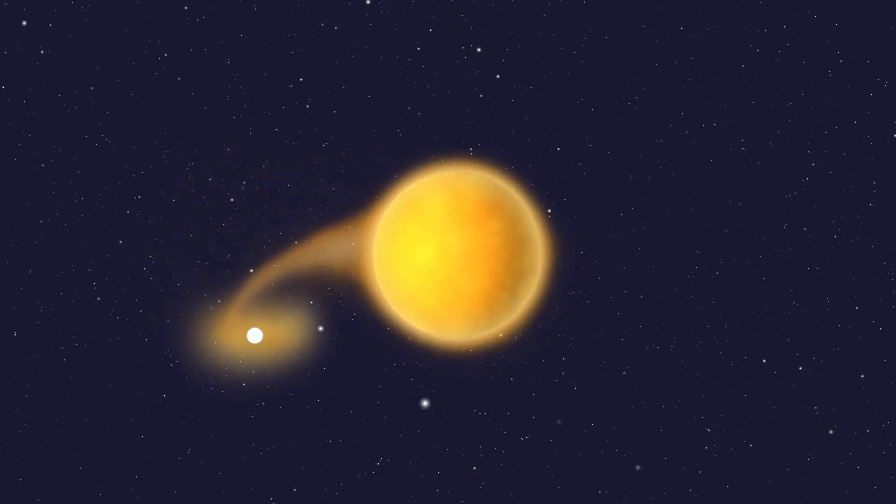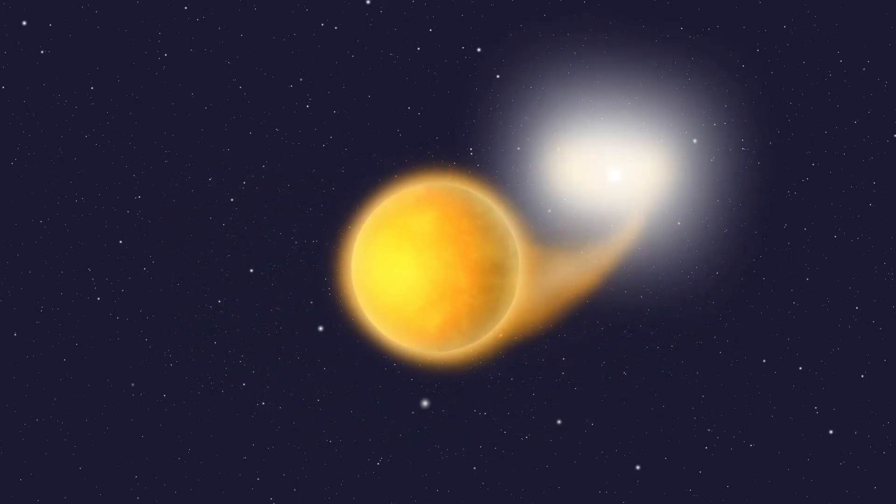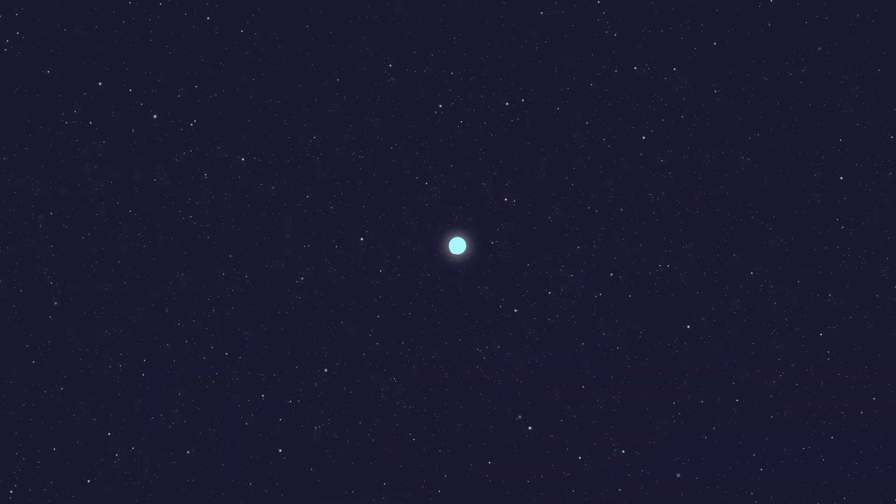If a white dwarf steals mass from a star like the Sun, then the explosion, the supernova, will hit the Sun and glow blue. We've seen this, but it doesn't happen all the time.